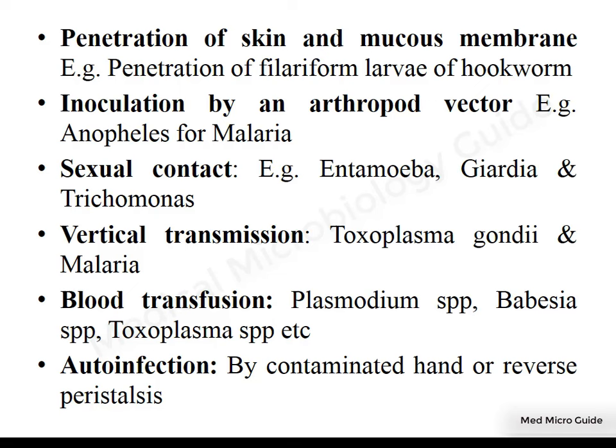Penetration of skin and mucous membrane is one method of transfer for a few parasites. Example: the filariform larva of hookworm can penetrate the soil and gain entry into the body. Inoculation by arthropod vector is an important mode of transmission for some parasites — for example, Anopheles transmitting malaria. Some parasites can be transmitted through the sexual route; the most common one is Trichomonas vaginalis, followed by Entamoeba histolytica and Giardia.